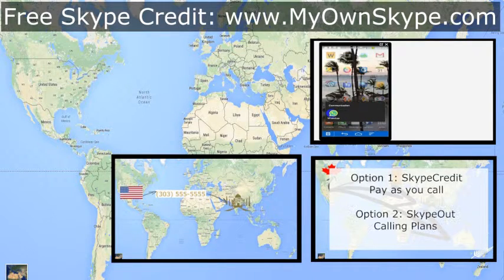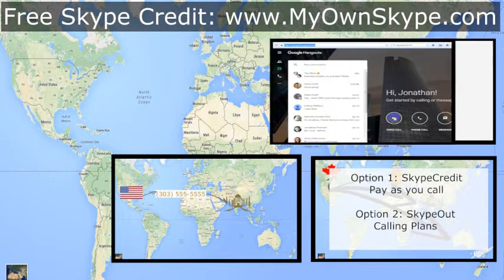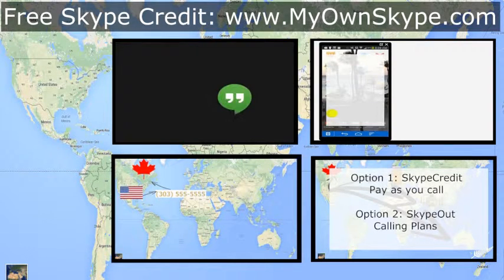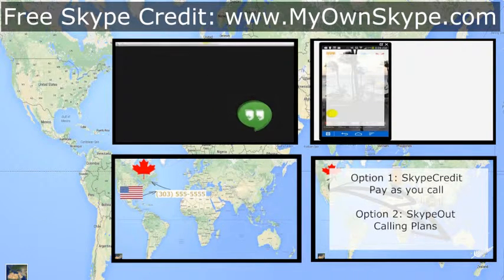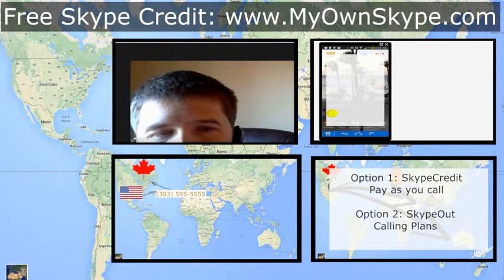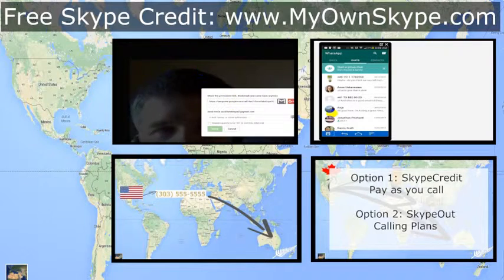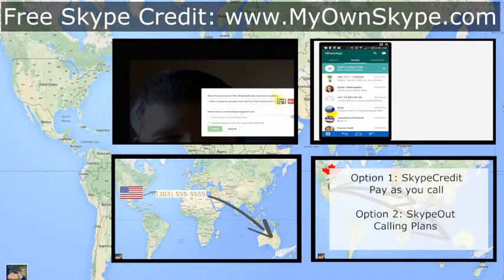The other option is Google Hangouts. You can set up a Hangout and then dial phones from right within the Hangout. It's a very simple way to do it, and we detail that in a separate video as well.